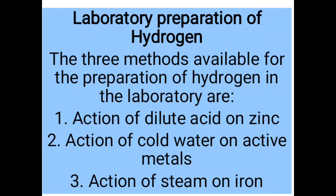Now, how do we prepare hydrogen in the lab? The three methods we use are: first, action of dilute acid on zinc — if you pour acid on any zinc material, hydrogen will be given off. Second, action of cold water on active metals — metals such as aluminium, calcium, potassium, and sodium: when you pour water on them, hydrogen will also be given off. Third, action of steam on iron — if you pass steam over iron, hydrogen will also be given off.